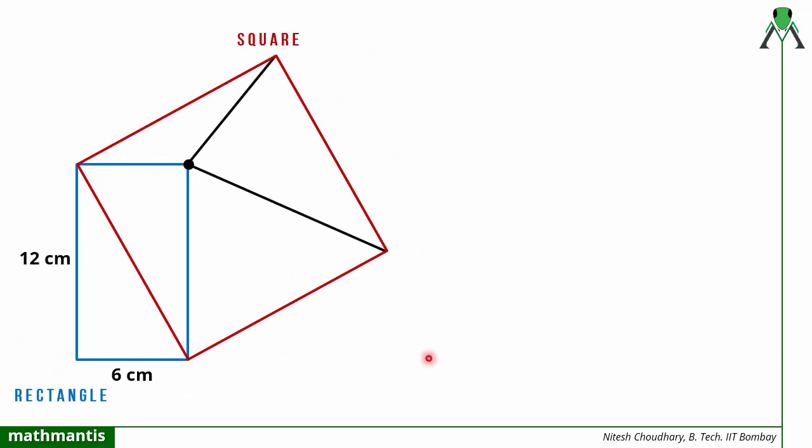So now to solve this question first I will use the properties of the rectangle. We know that in the rectangle all the angles are 90 degrees and the opposite sides are also equal. So this is 6, this must be 6, this is 12 so this side must be 12.